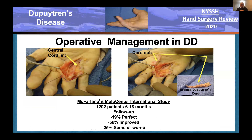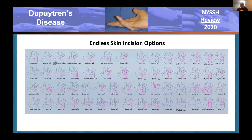The management surgically has been studied by McFarlane in a multicenter international study of 1,200 patients. About 20% did really well, 60% or so improved, but some surgical patients were the same or worse after surgical intervention. Surgery works, but it's not guaranteed. The surgical incisions for Dupuytren's disease are numerous. The standard current incisions used today are the zigzag incision, a longitudinal incision later turned into a zigzag by Z-plasty, or transverse incisions popularized by McCash.